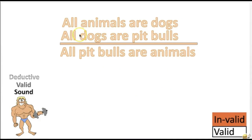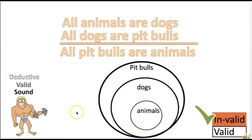Here's another practice problem: 'All animals are dogs. All dogs are pit bulls. Therefore, all pit bulls are animals.' Is this argument valid or invalid? The answer is invalid. Both premises are actually false, but if you were to assume that they're true, then the animals would have to go inside the pit bulls group. The valid conclusion would be that all animals are pit bulls.